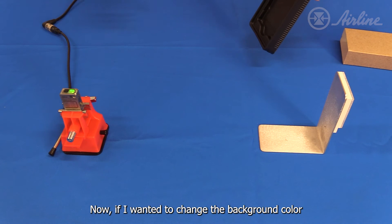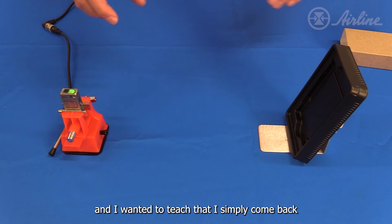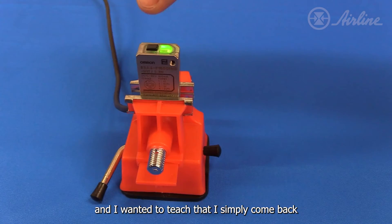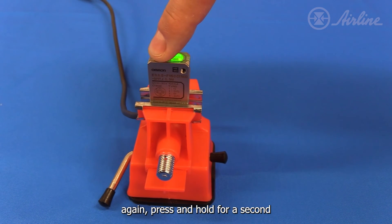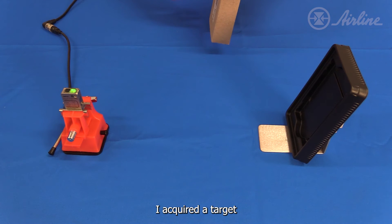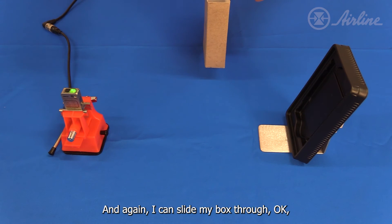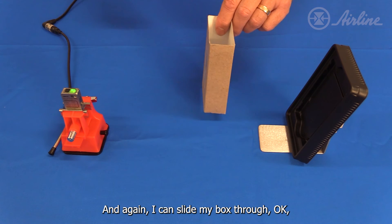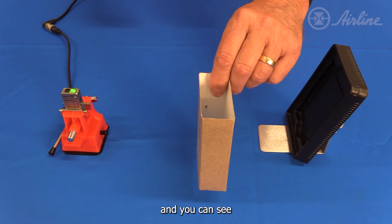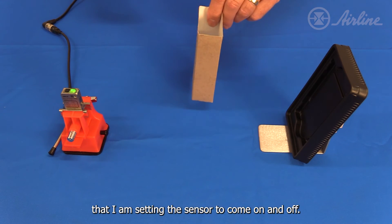Now if I wanted to change the background color, and I can show you now a black color, and I wanted to teach that, I simply come back again, press and hold for a second less than five. I acquired a target by coming back to the green state - that tells me that it's stable - and again I can slide my box through, and you can see that I am setting the sensor to come on and off.